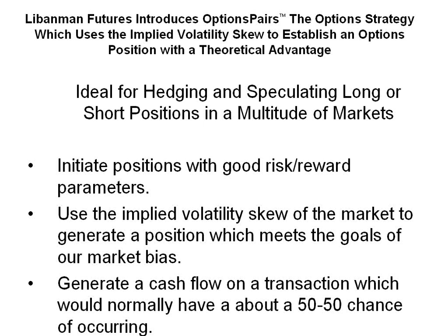The strategy is ideal for hedging and speculating long or short positions in a multitude of markets. Which way the skew goes determines whether it's in your benefit to use it with your market bias. With it, you initiate positions with good risk-reward parameters. We use the implied volatility skew of the market to generate a position which meets the goals of our market bias. We can generate a cash flow on a transaction which would normally have about a 50-50 chance of occurring. I like to equate it with the tossing of a coin — if you'd normally win or lose, you'd expect a 50-50 proposition and get paid a dollar to win a dollar. In this case, as you'll see in some of the transactions listed, if you put up $10, you could actually make $11, or you could only lose $9. There's an advantage provided by the skew, and if you have the right market bias, you can really use this ability to take advantage of it.